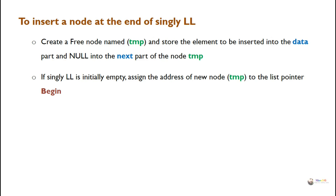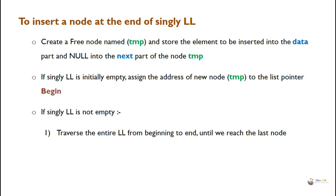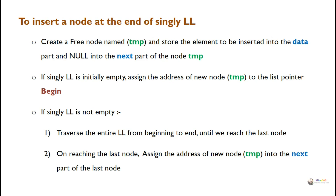If the singly linked list is not empty, there are already some nodes present. We must reach the last node by traversing the entire linked list from beginning to end until we reach the last node. Once there, assign the address of the new node temp to the next part of the last node, so that temp gets joined at the end of the singly linked list.